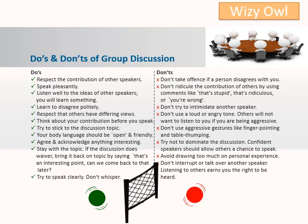Have a look at the don'ts in a group discussion. Don't take offense if a person disagrees with you. Don't ridicule the contribution of others by using comments like 'that's stupid', 'that's ridiculous', or 'you're wrong'. Don't try to intimidate another speaker. Don't use a loud or angry tone — others will not want to listen to you if you are being aggressive. Don't use aggressive gestures like finger pointing and table thumping. Try not to dominate the discussion. Confident speakers should allow others a chance to speak. Avoid drawing too much on personal experience. Don't interrupt or talk over another speaker. Listening to others earns you the right to be heard.